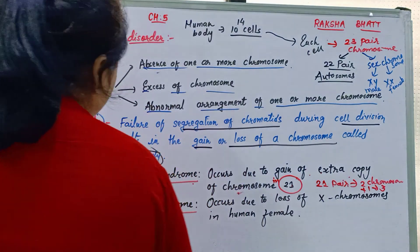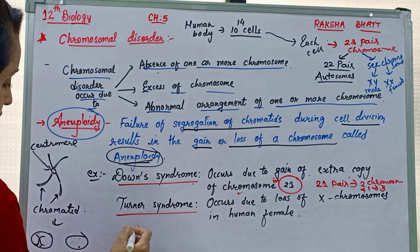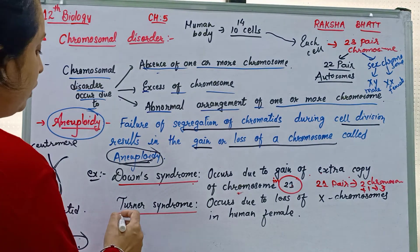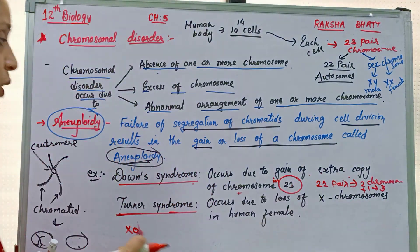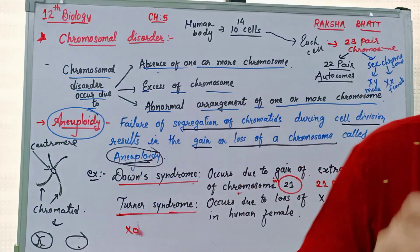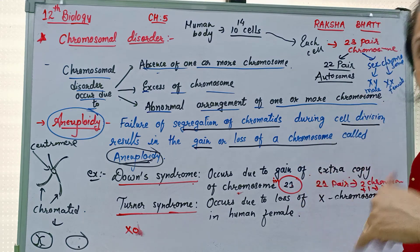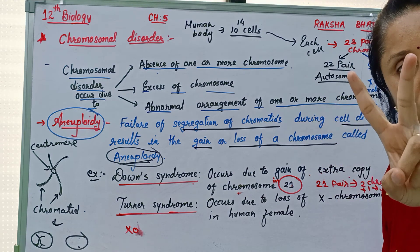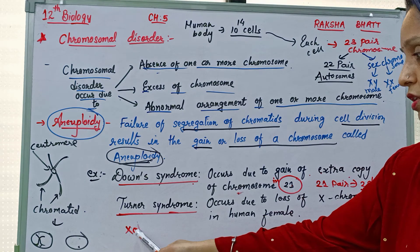The second example is Turner syndrome. In normal females the sex chromosome is XX, but in Turner syndrome one X chromosome is lost, resulting in XO — only one X chromosome is present instead of two. Turner syndrome occurs due to loss of an X chromosome in a human female.